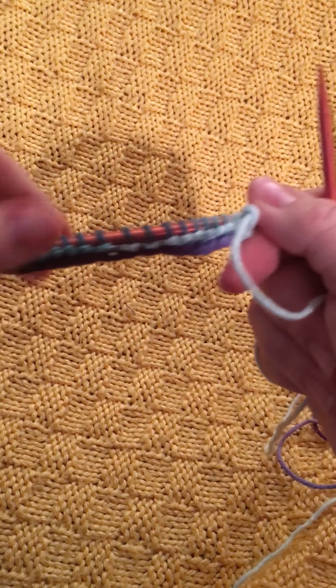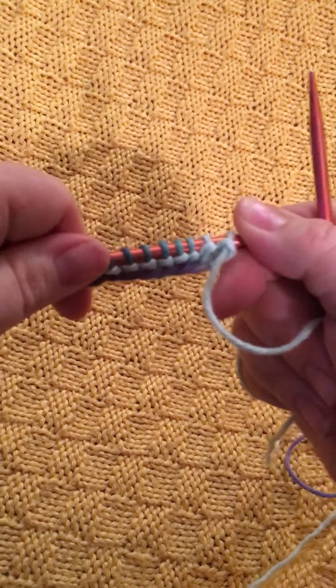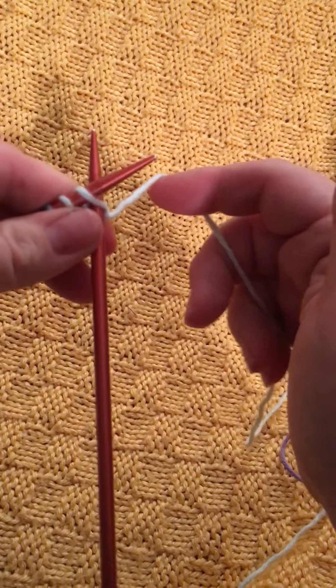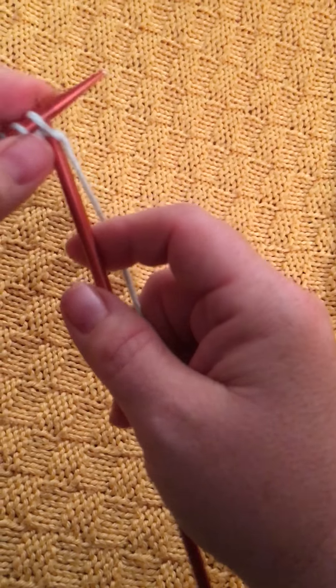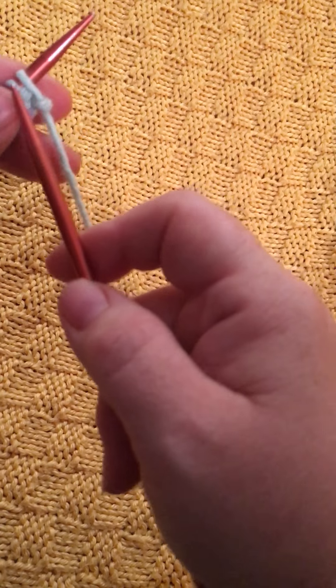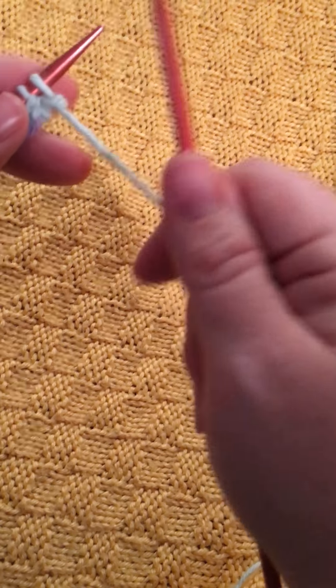So these are, as my husband would call them, the loops. What you're gonna do is you're gonna stick the loop through the hole. Hi Sarah, I'm making a video right now. Okay, so you're gonna stick your needle through the loop from right to left, back to front.